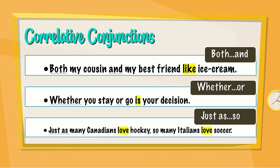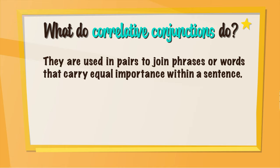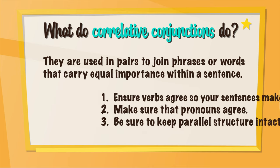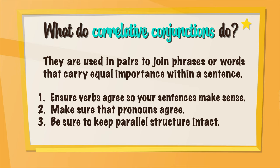There are many other correlative conjunctions, but these are the most important ones. They're used in pairs to join phrases or words that carry equal importance within a sentence. When using correlative conjunctions, you must ensure verbs agree so your sentences make sense, make sure that pronouns agree, and also be sure to keep parallel structure intact.